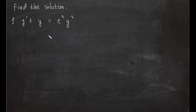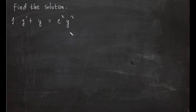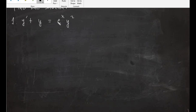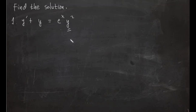We continue our discussion of Bernoulli differential equations with some solution to problems. First, we have y prime plus y is equal to e raised to x times y squared. This is a Bernoulli differential equation because we have y squared multiplied by our function of x.